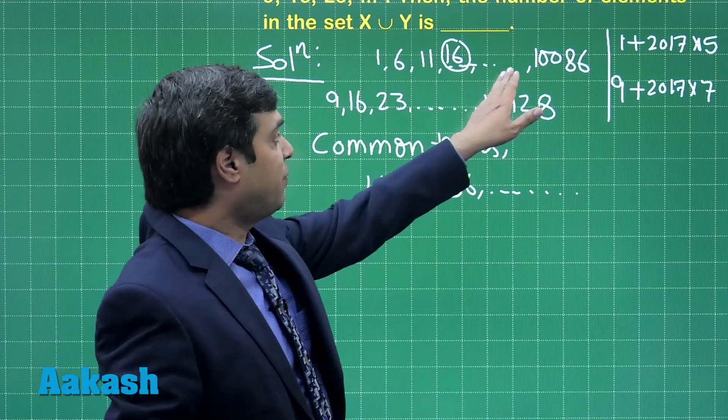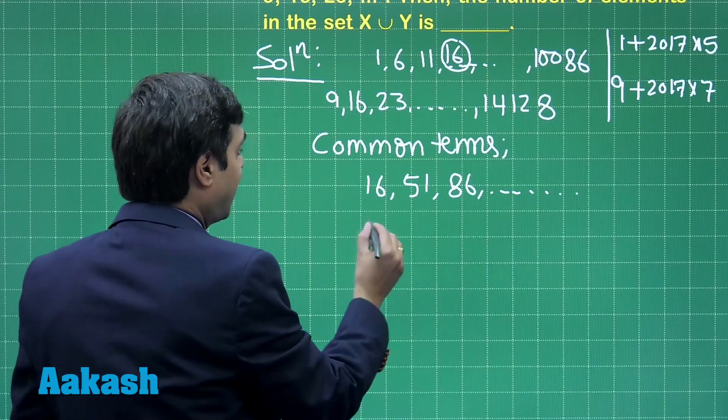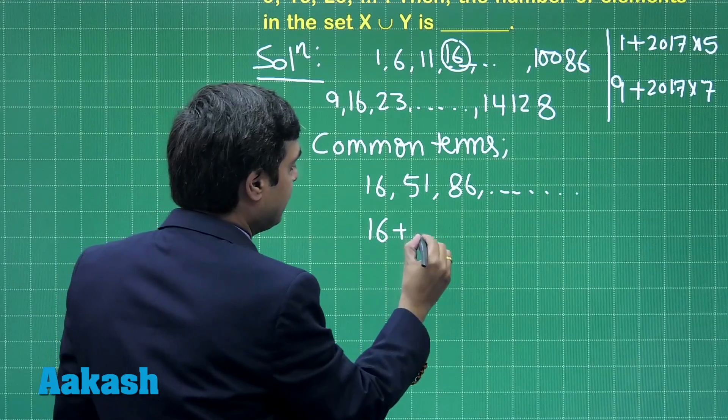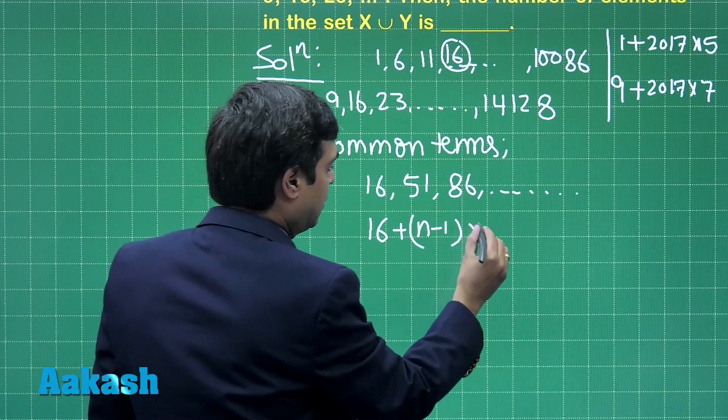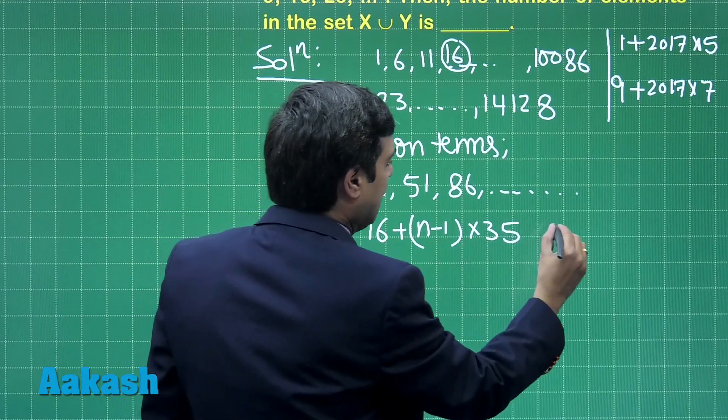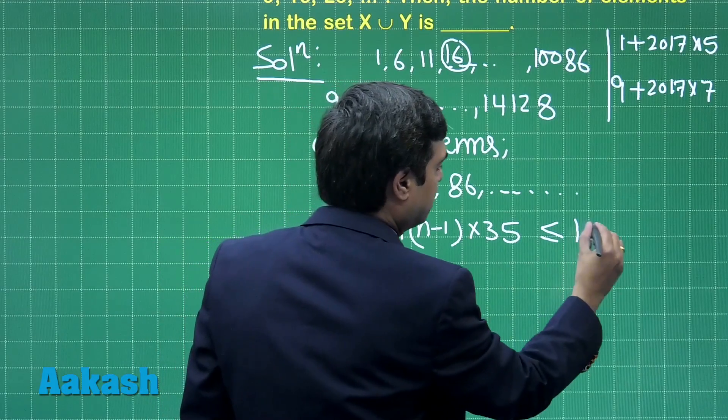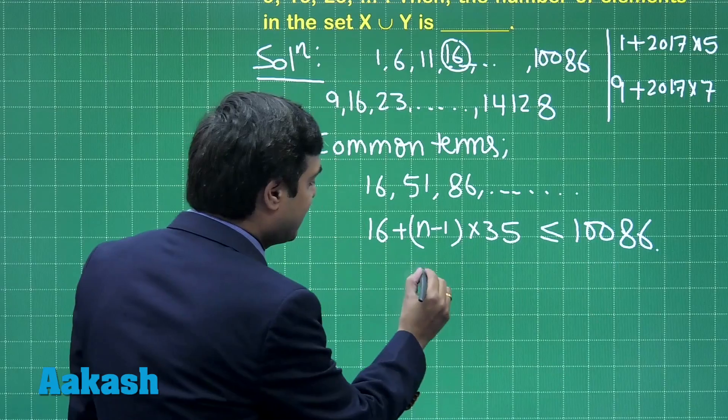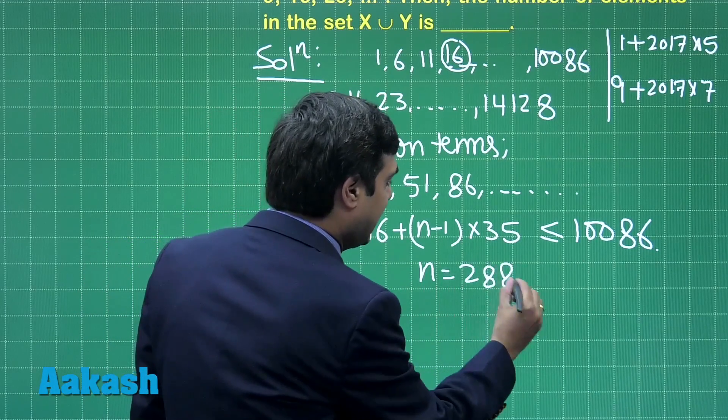The lesser of the two is 10086. So, we can start like, let us say nth term of this AP, it should be less than equal to 10086. Simplifying this gives me n equals 288.